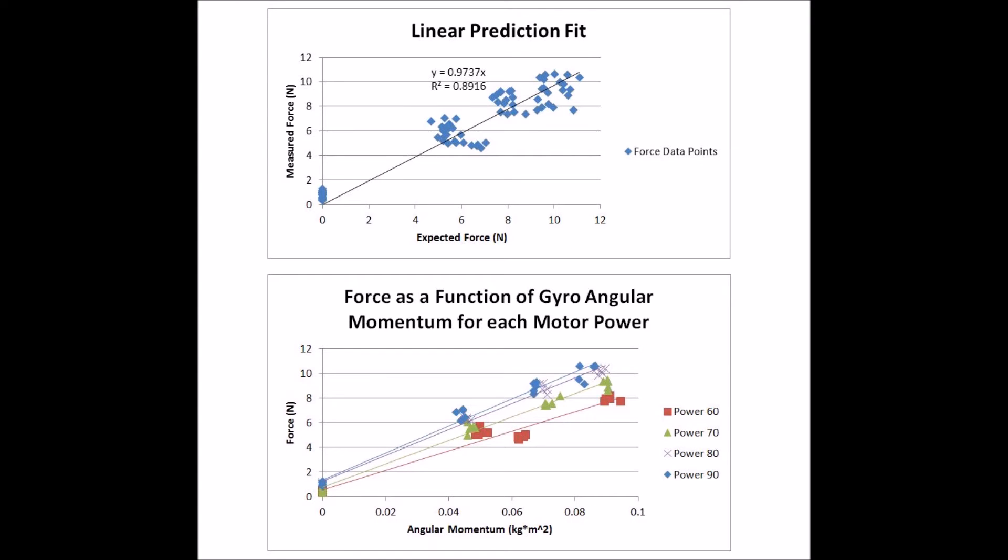Overall, this graph shows that if you compare the expected force with the measured force, there's a very close 1 to 1 relationship. In fact, a linear regression line has a slope of 0.97, which is very close to 1, with 89% of the variation of the data points accounted for by that line.